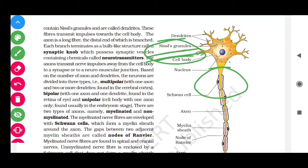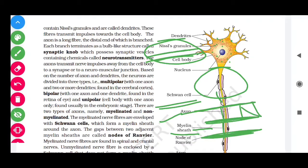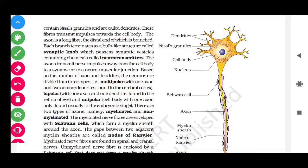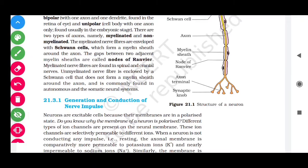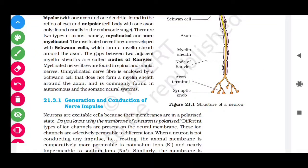Schwann cells wrap around the axon forming the myelin sheath. There is a gap in the myelin sheath known as the node of Ranvier. At the terminal end of the axon, there are small bulb-like structures called synaptic bulbs, and this terminal portion is called the axon terminal.